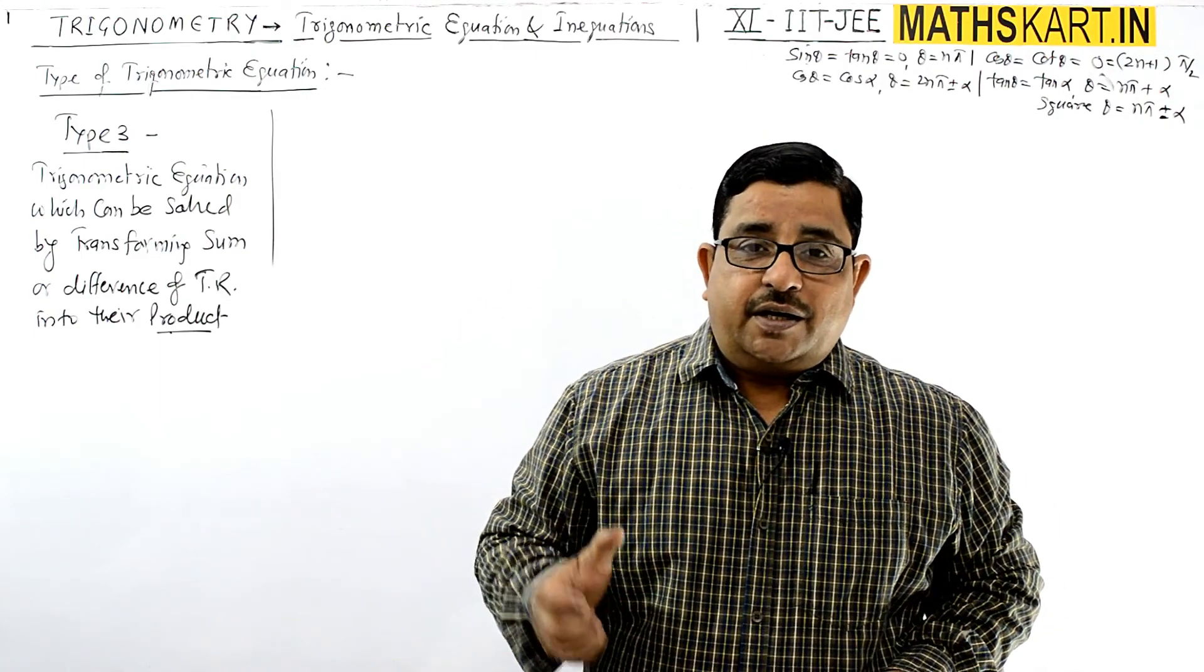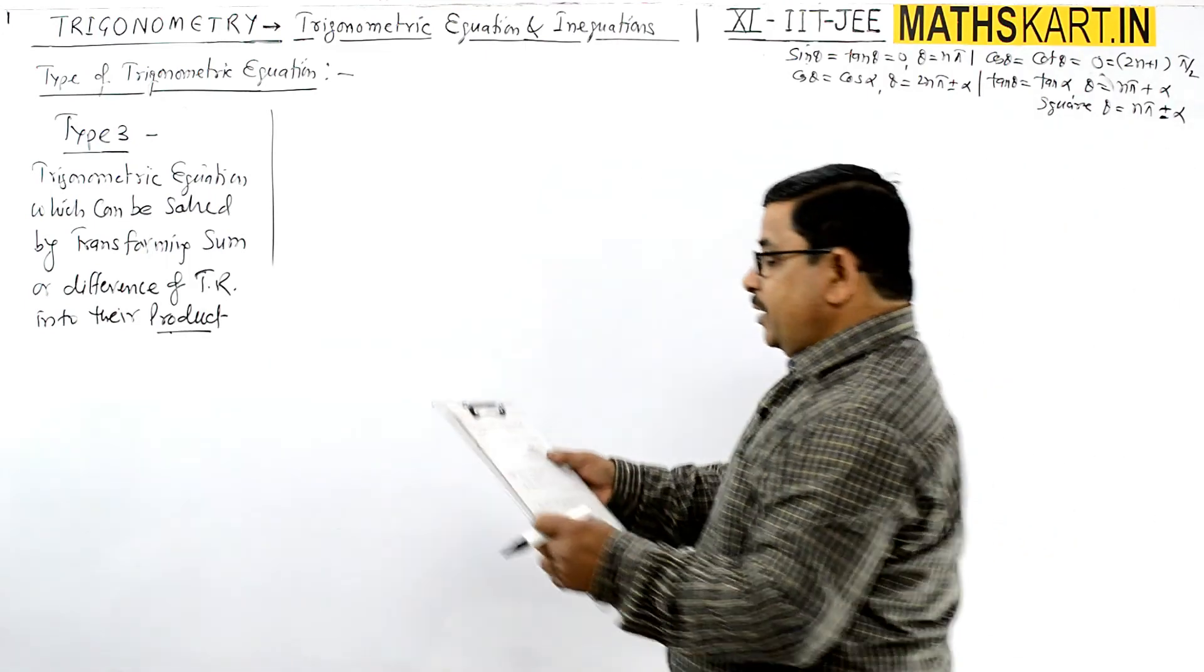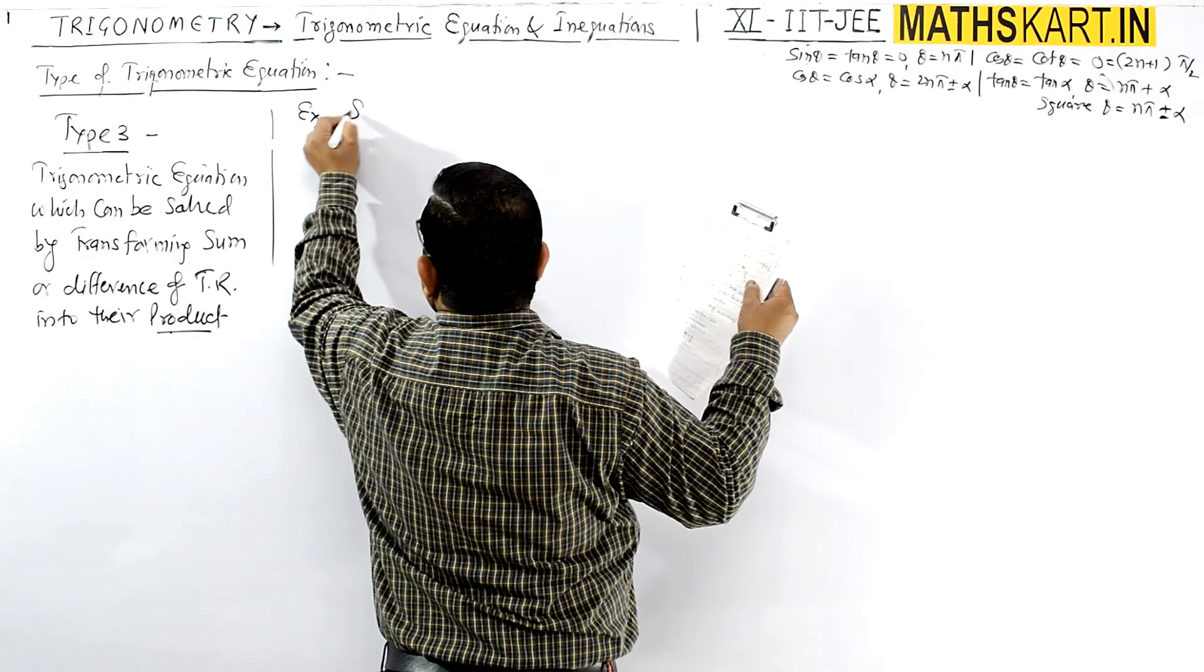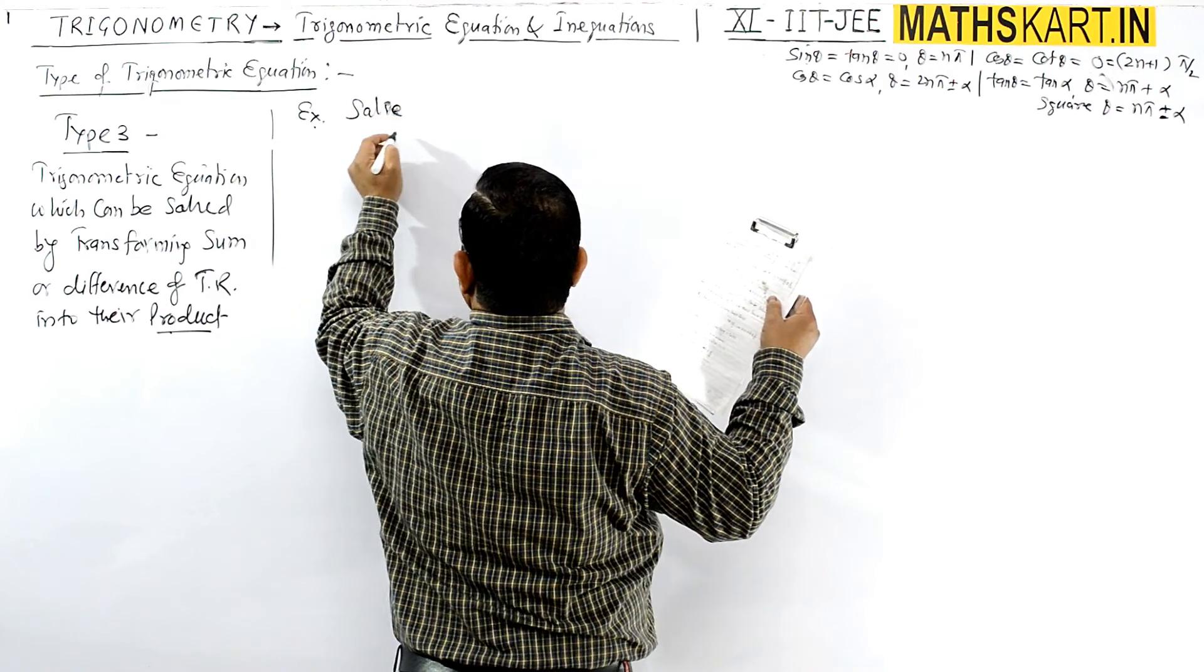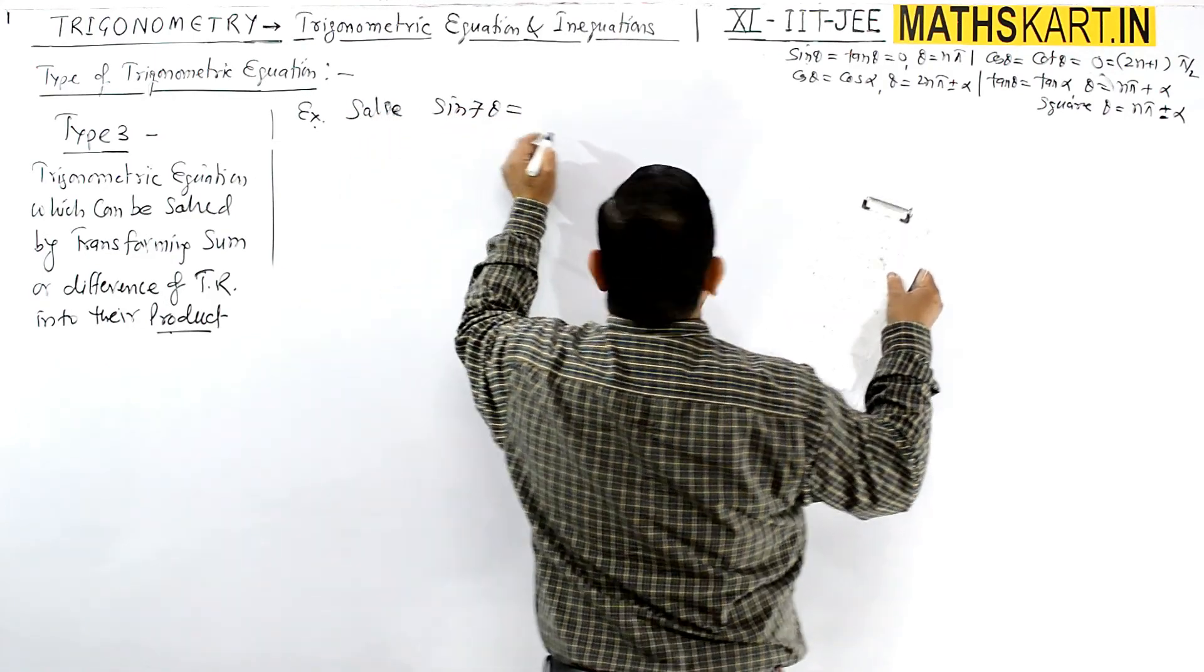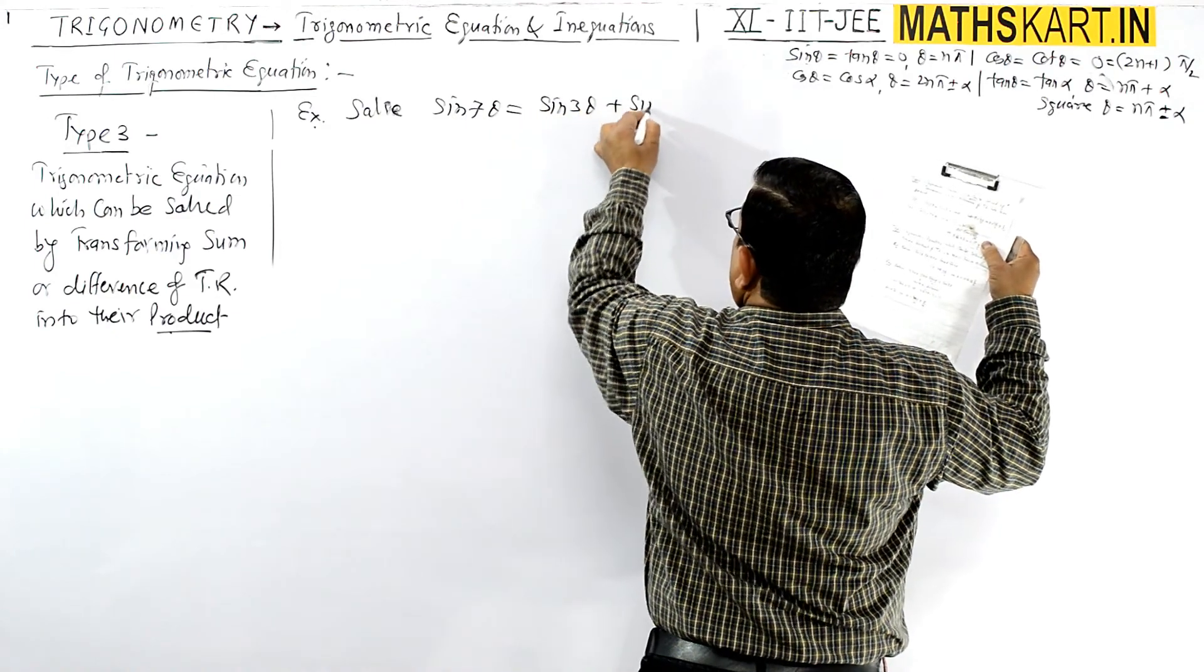Let me take an example directly. Suppose it is given: solve sin 7θ = sin 3θ + sin θ.